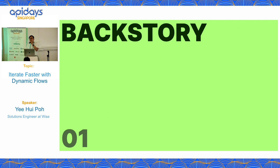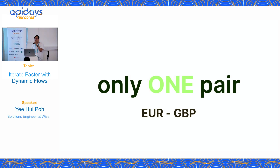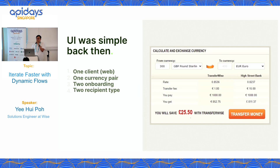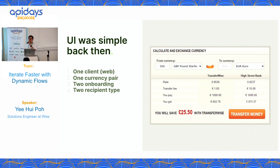What is the backstory of dynamic flow? Why do we need it? The story goes back to 2011 when we had just started. Back then, we only had one pair of currencies: euro and British pound. Things were still very simple because there were only a limited number of currencies. The UI was simple because we only had one client, which was web — we did not have Android and iOS yet. This meant we had two onboarding flows, one for each currency, and two recipient types, also one for each currency.